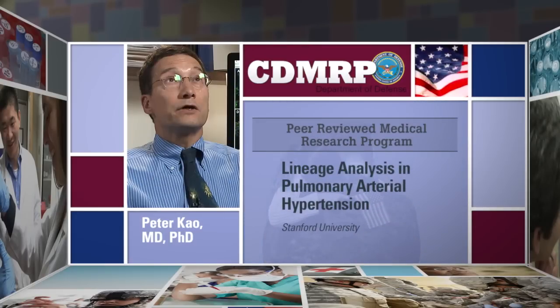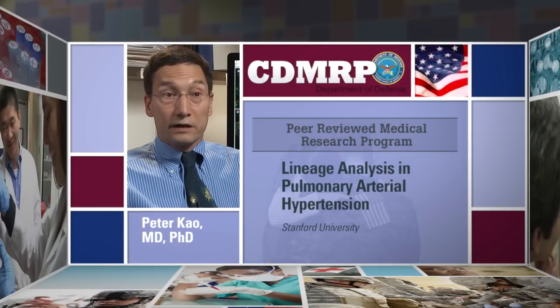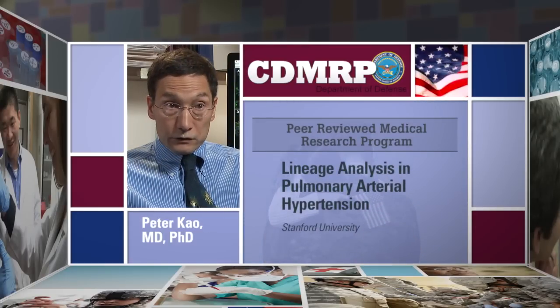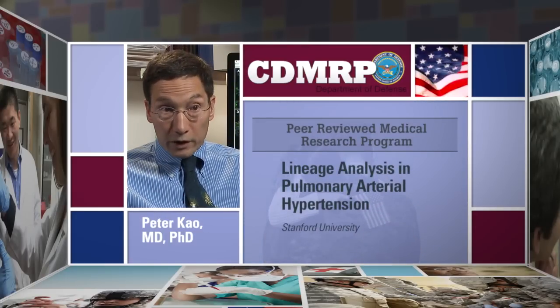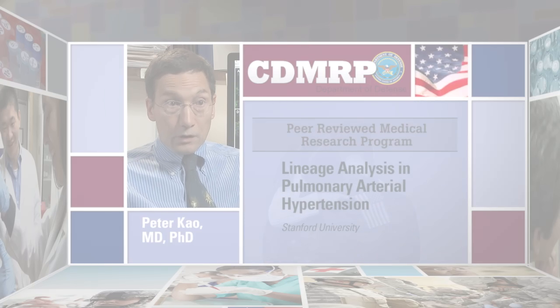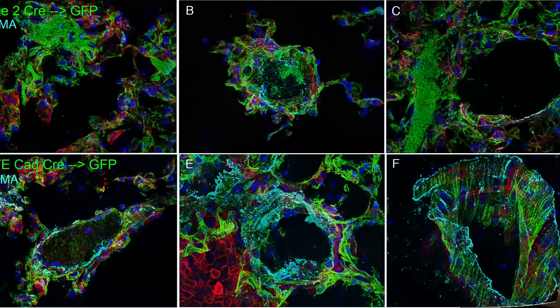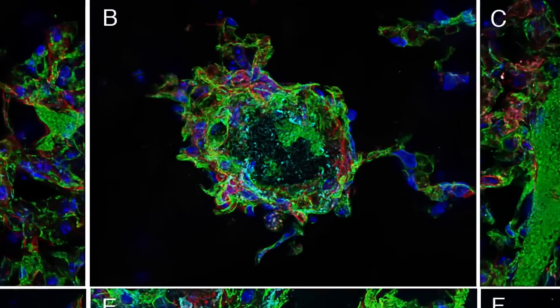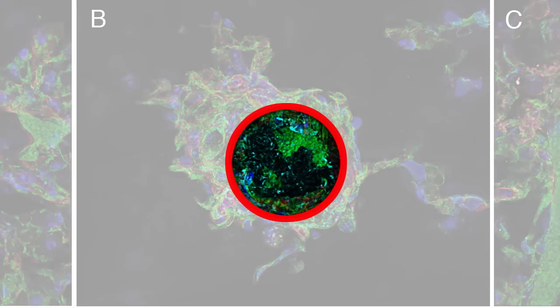The title of the DOD grant was Lineage Analysis in Pulmonary Hypertension. In contrast to systemic hypertension, pulmonary hypertension is characterized by a cellular overgrowth in the center of the vessels.